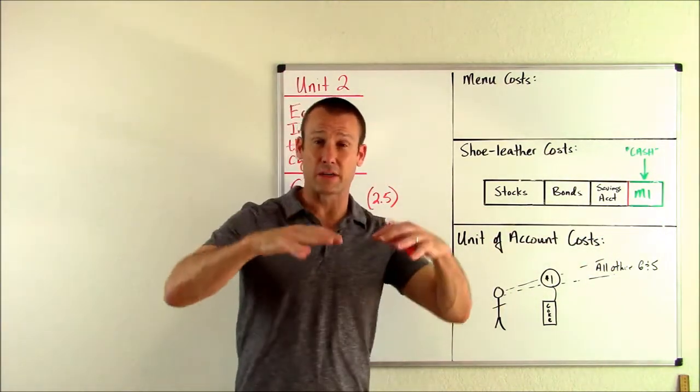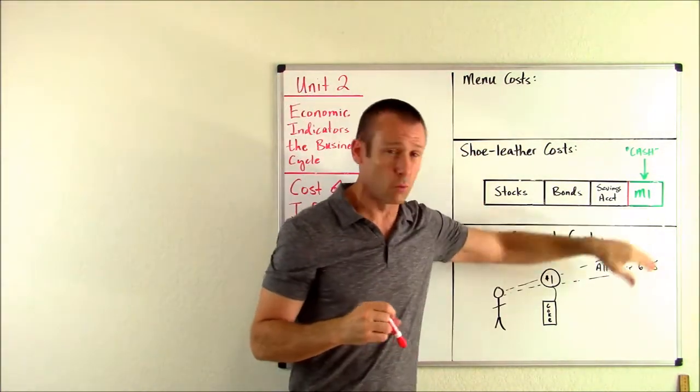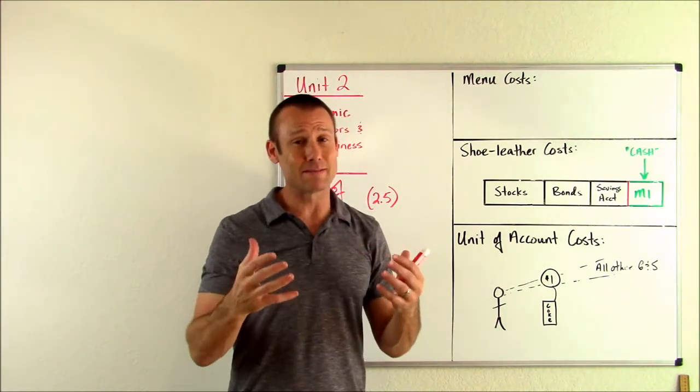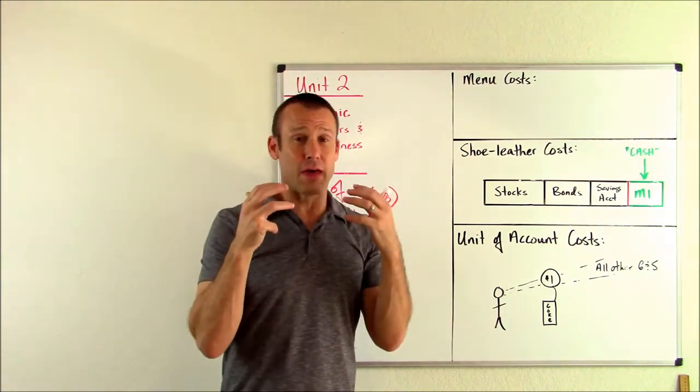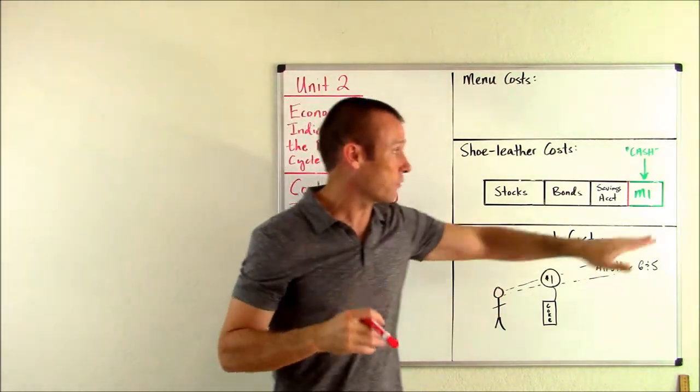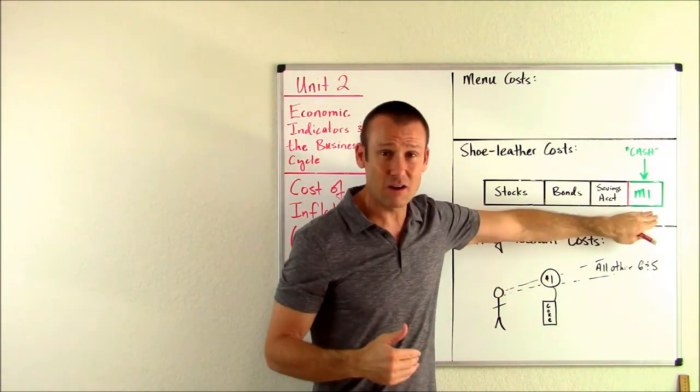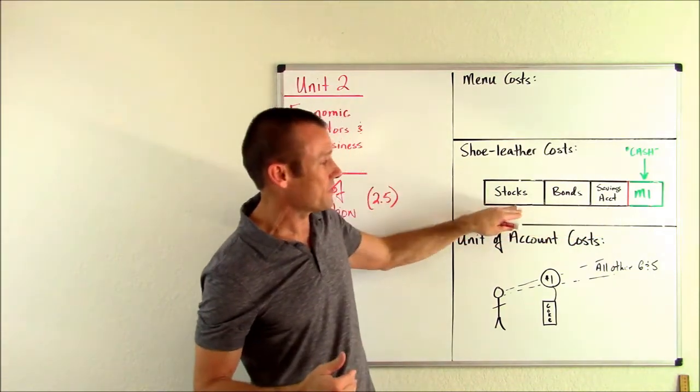When you have inflation, prices of goods and services are going up. The price level going up. What's happening to your real wealth? The amount of goods and services your wealth can buy. That's going down. So here's the deal. When inflation starts to tick up, that cost starts to increase of holding your wealth here. And you start saying, I need to hold less of my wealth in this category. I need to hold more of my wealth in these.